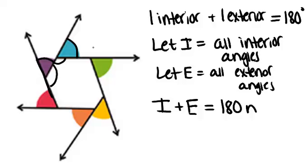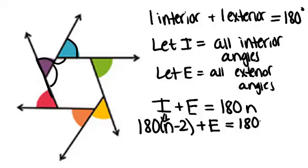Now we know something else. We know that the sum of the interior angles for any convex polygon is 180 times n minus 2. So I equals 180 times n minus 2. So if we substitute that in, we know 180 times n minus 2 plus E equals 180 times n.